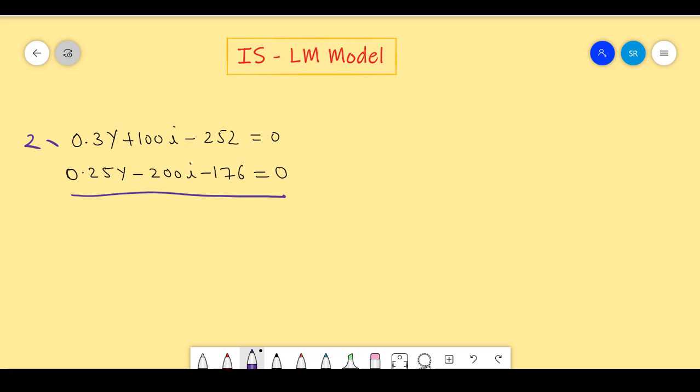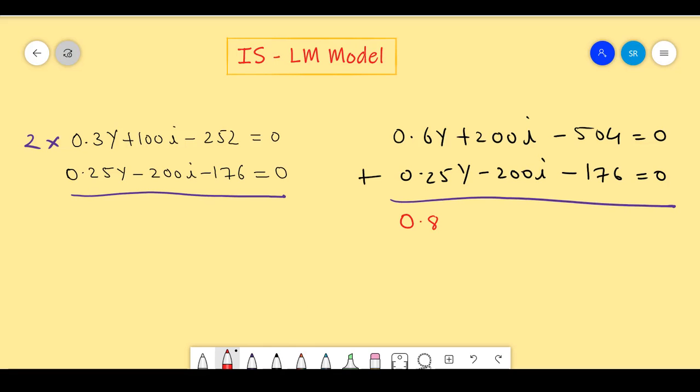Now, we multiply the above equation by 2. Our new equation will be 0.6Y plus 200I minus 504. If we add the new equation with our LM equation, we get 0.85Y equals 680. Therefore, Y equals 680 upon 0.85 which equals 800.